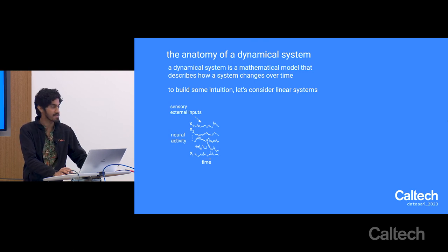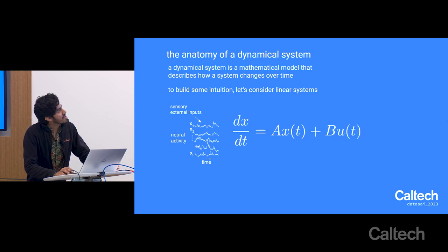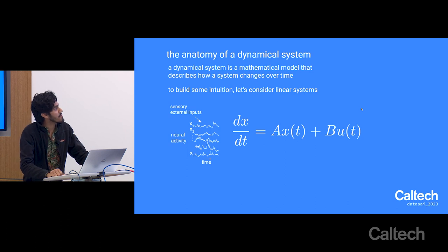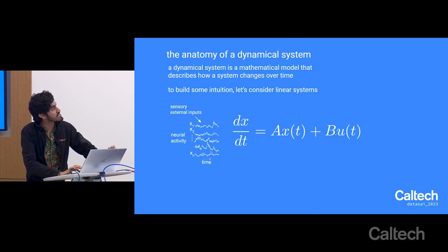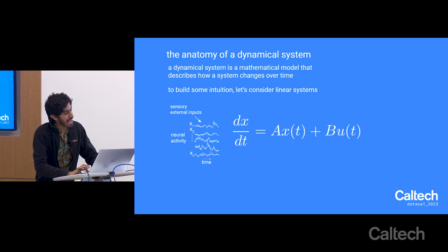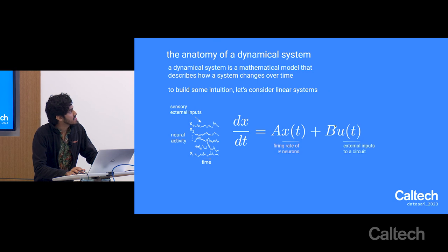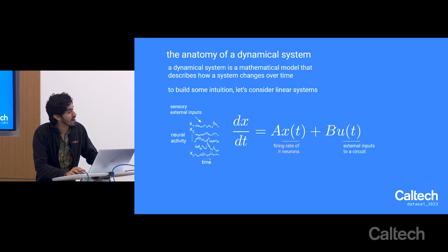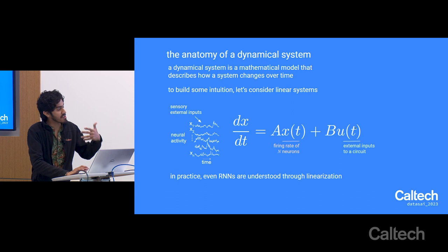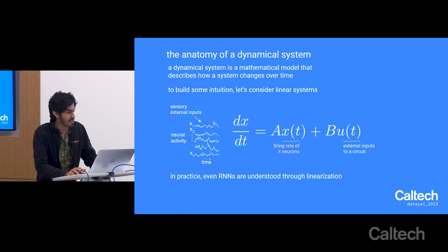This is useful because ultimately, even when thinking about nonlinear systems like recurrent neural networks, we actually perform linearization to understand them. There's really no good way right now to think about theories for nonlinear systems—the only way we understand them is through the lens of linear systems. As a linear system, we can replace the nonlinear function F(X) with a simple linear equation, so that the evolution of X depends on two different matrices, A and B. X is the firing rate of all neurons, and U represents external inputs to the circuit.